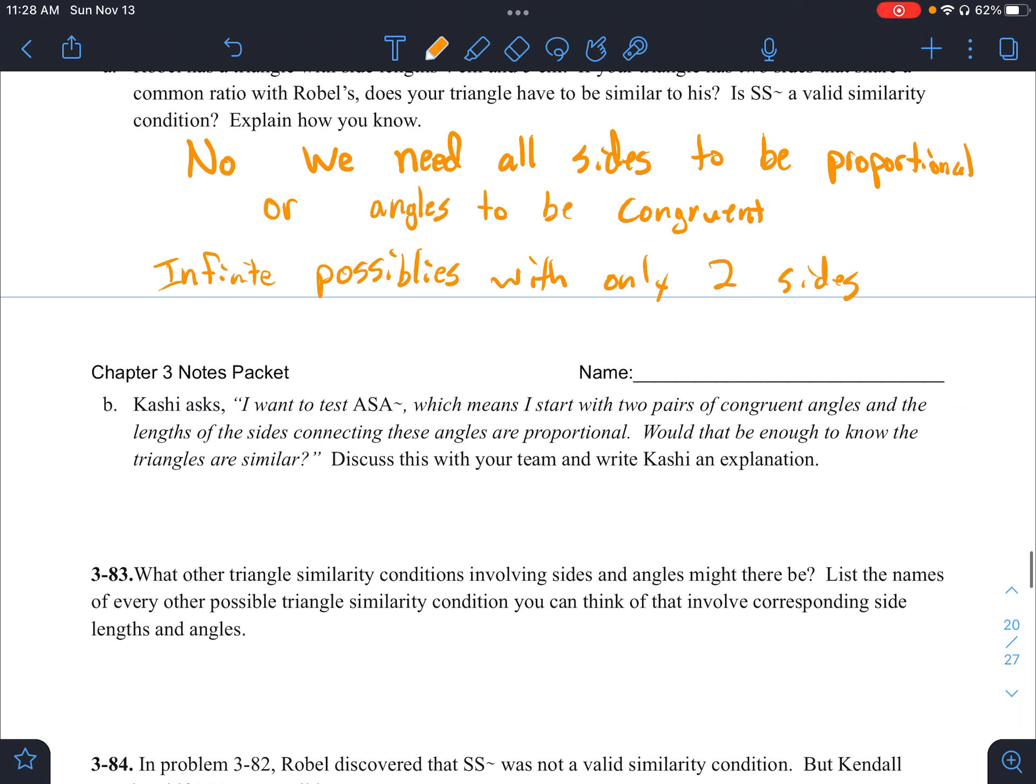Then in letter B says, I want to test angle side angle similarity, which means I start with two pairs of congruent angles and the length of the sides connecting these angles are proportional. Would that be enough information? This one is yes. This is the same as angle angle similarity. We only need two angles. So if we have two angles, we don't really need the sides.